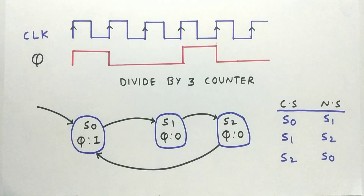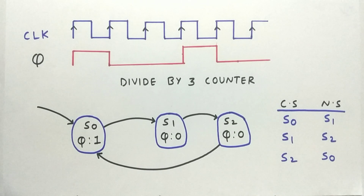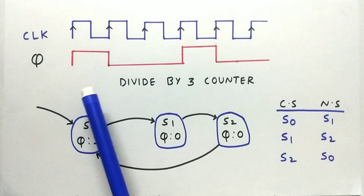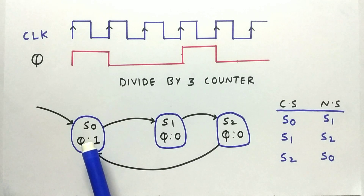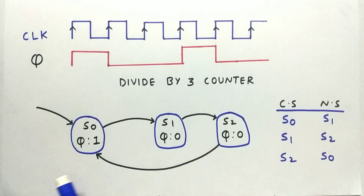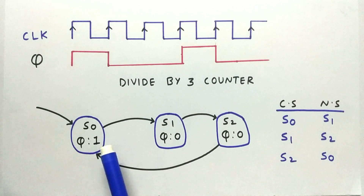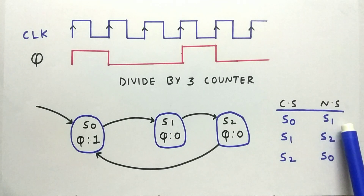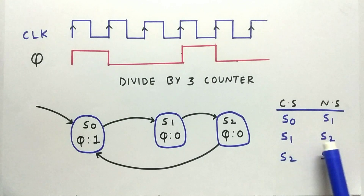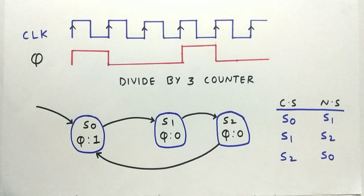Let's take an example. This is an example of a divide-by-three counter where we have only one output and no inputs. The output Q is high for one clock cycle out of every three. The waveform clearly represents it. This is the state machine for the divide-by-three counter — we have three states S0, S1, and S2, with no inputs, only an output that is high in one state and zero in the other two. For this state machine, we are going to design the circuit based on both encoding schemes: binary encoded scheme and one-hot encoding scheme.